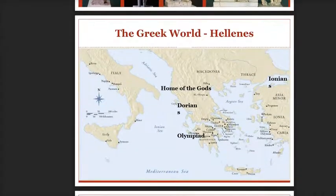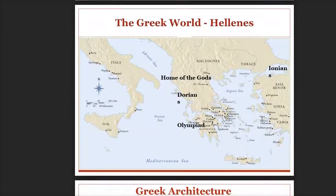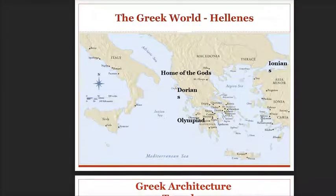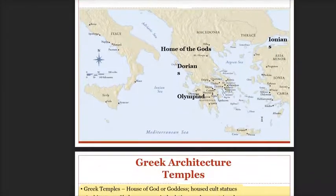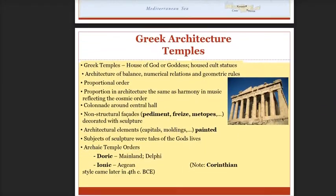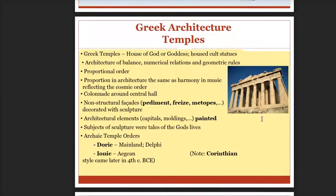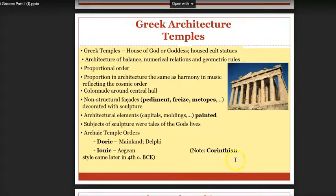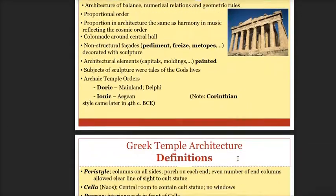The Greeks called themselves the Hellenists. We'll look at Greek architecture this week, researching the Doric and Ionic temples. Later on, you'll see a lot of the Corinthian order coming in as well.